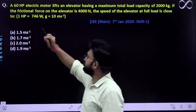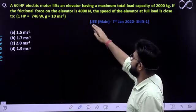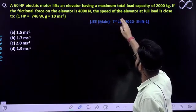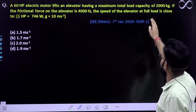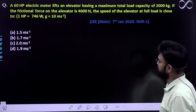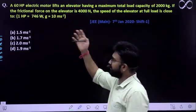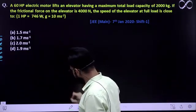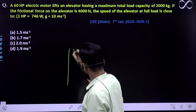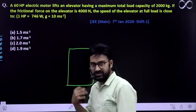Question kya kehta hai dekho? A 60 HP electric motor lifts an elevator having a maximum total load capacity of 2000 kg. Ek lift hai jiska already power aapko given hai. Toh bhai let's first make the diagram quickly, and after that we'll easily solve the question. First of all, we need to visualize it, right?